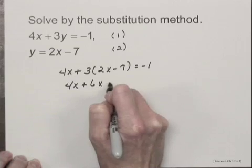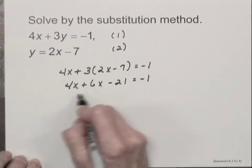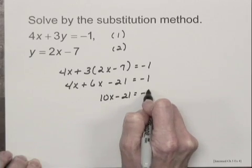When I remove parentheses, I have 4x plus 6x minus 21 equals negative 1, and combining like terms, I have 10x minus 21 equals negative 1.